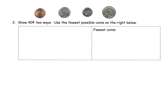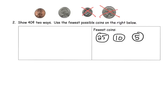To make 40 cents, start with a quarter. Can we use another quarter? No, because 25 plus 25 is 50 cents — that's too much. So we're done with quarters. Can we add a dime? Yes — 25 plus 10 is 35. Can we add another dime? No, that gives us 45 — too much. Can we add a nickel? Yes — 35 plus 5 gives us 40 cents. We're done. We've used the fewest number of coins possible.